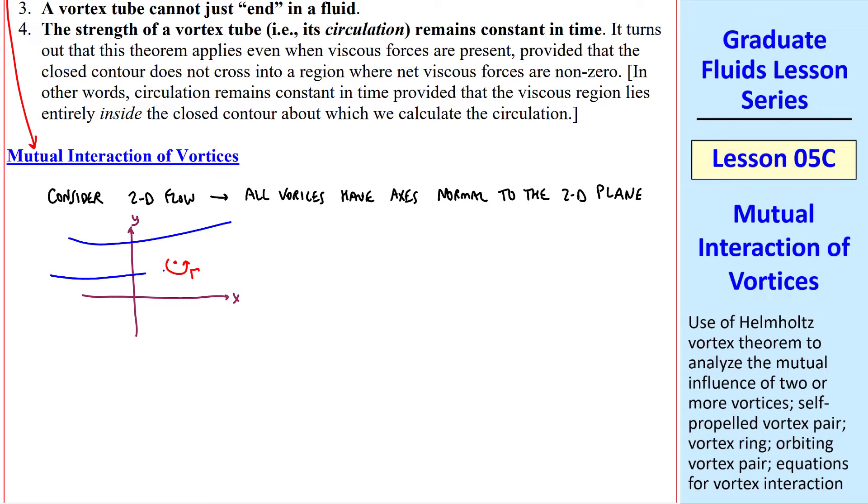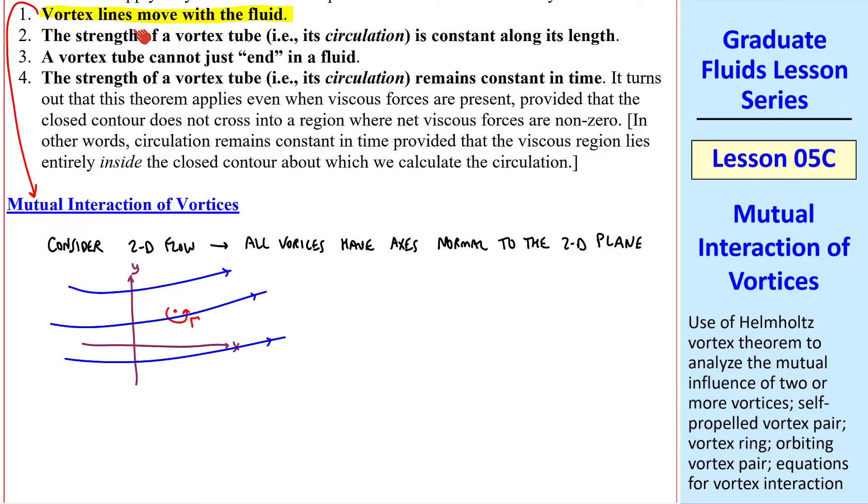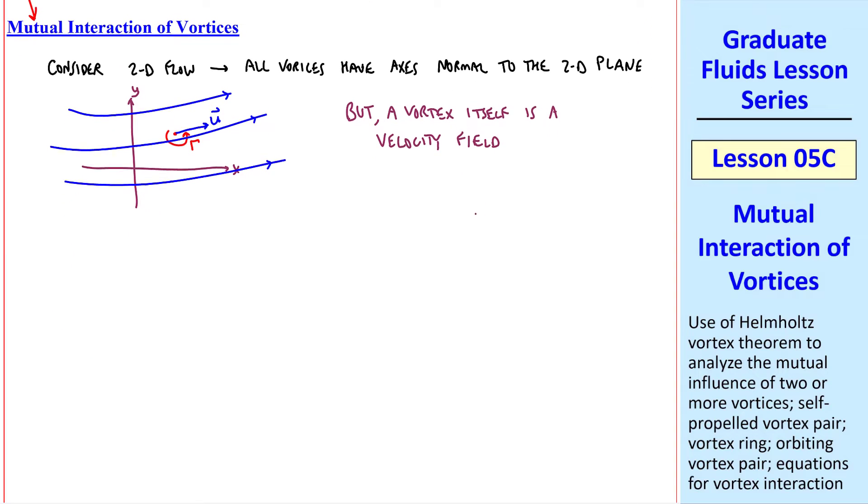If this line vortex is in a flow field, where these are streamlines, Helmholtz's Vortex Theorem Number 1 tells us that this vortex will move with the fluid, in this case at some velocity u. But a vortex itself is a velocity field. We'll sketch what the flow looks like.